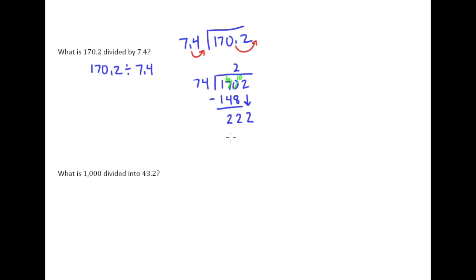And then we drop this 2 down, of course. And 74 goes into 222. Well, how about we think of 75? That's an easy number to think of. So 75 and 75 is 150. Another 75 would be 225.